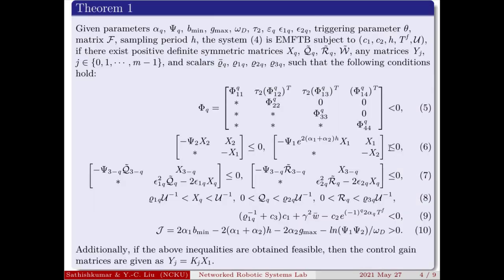In this theorem, we prove that the system four is exponentially mean square finite time bounded subject to these constraints. Then, the following conditions 5, 6, 7, 8, 9, 10 should be satisfied. And the control gain matrices are given as y_j equal to k_j into x_1. Next, we move on to the numerical example. We consider the satellite control system model as one. And the corresponding system parameter values are A, B and B_w. By solving theorem one, we obtain the control gain and the triggering parameter values are as k_0, k_1, k_2 and omega.